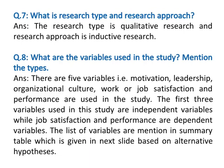Question eight: What are the variables used in the study? Mention the types. The answer is there are five variables: motivation, leadership, organizational culture, job satisfaction, and performance. The first three variables are independent variables, while job satisfaction and performance are dependent variables. The list of variables is mentioned in a summary table given in the next slide based on alternative hypotheses.